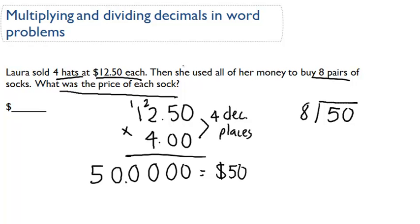Now, to figure out the price of each sock, we're going to have to take the total that she made, which is $50, and divide it by eight.